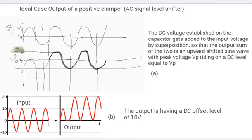If ideal case, ideal model of diode is considered, we can say that the DC voltage established on the capacitor gets added to the input voltage by superposition so that the output sum of the two is an upward shifted sine wave with peak voltage Vp. This is the peak voltage riding on a DC level equal to Vp.